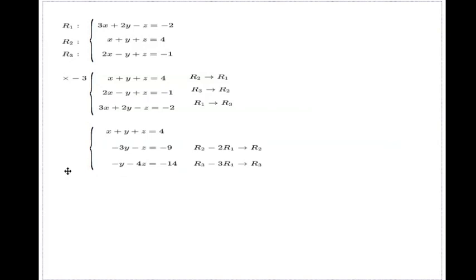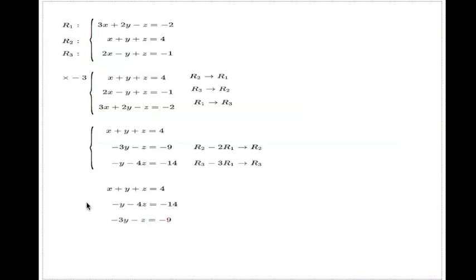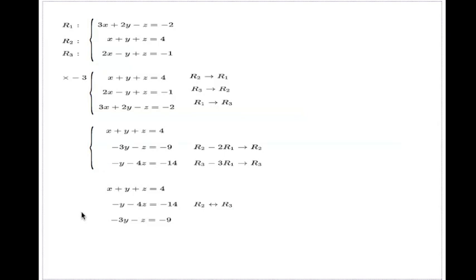We're close to the triangular shape. All we have to do now is get rid of this y. I think it's easier if we swap these two equations. I have a copy of the first equation, a copy of the third one now sitting in the second position, and a copy of the last one. You can just say we swap these two rows — swap row R2 and R3. And now for the remaining two, I can do a similar transformation by using the second equation to vanish this negative three.